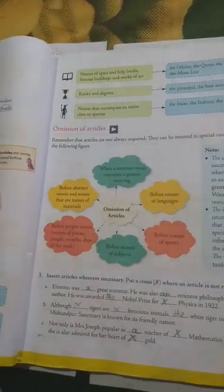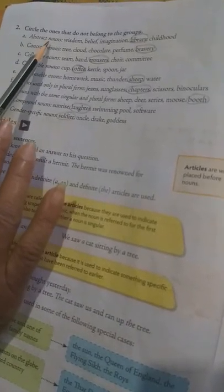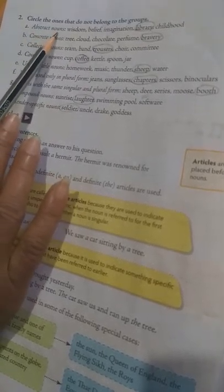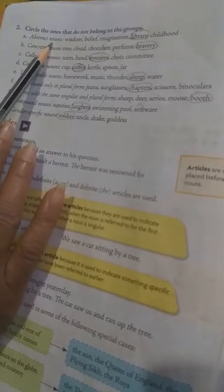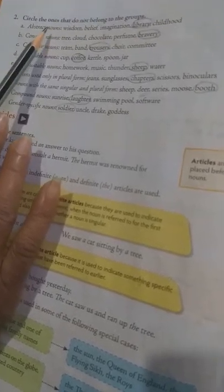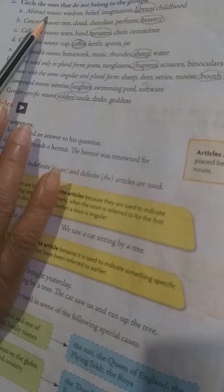So student, when you learn this question, please you remember the two synonyms of each word. So, now you come to the page number 24. Page number 24, circle the ones that do not belong to the groups. So, number 1 is abstract noun. Abstract nouns, all of you know. What are abstract nouns? Abstract nouns, we cannot experience through our five sense organs. Only we can realize that and feeling that. So, wisdom, belief, imagination, childhood, all are your abstract nouns but library is not your abstract noun. So, you make it circle.